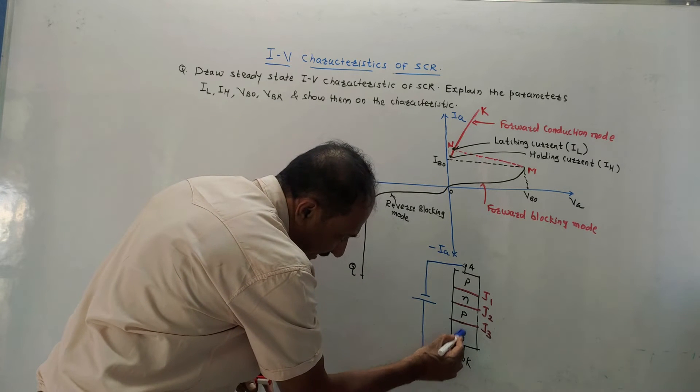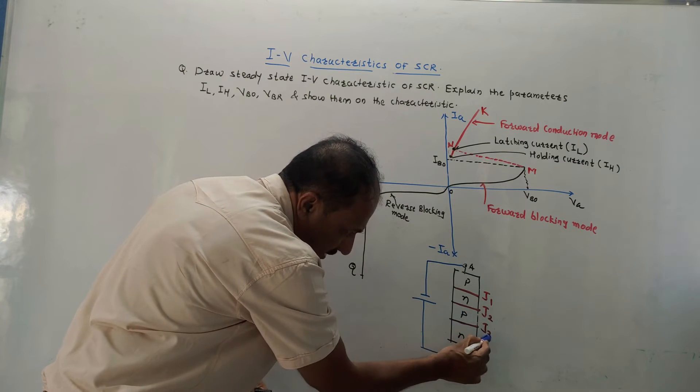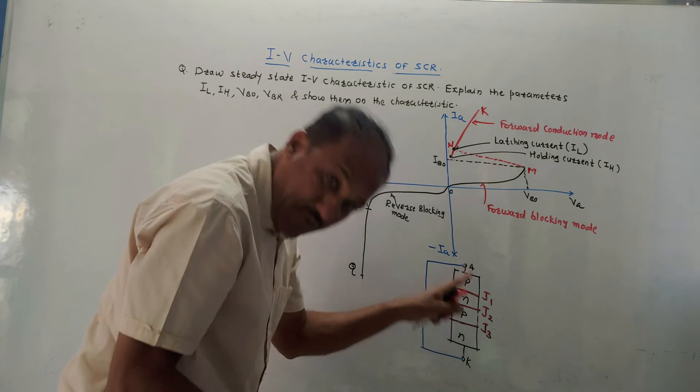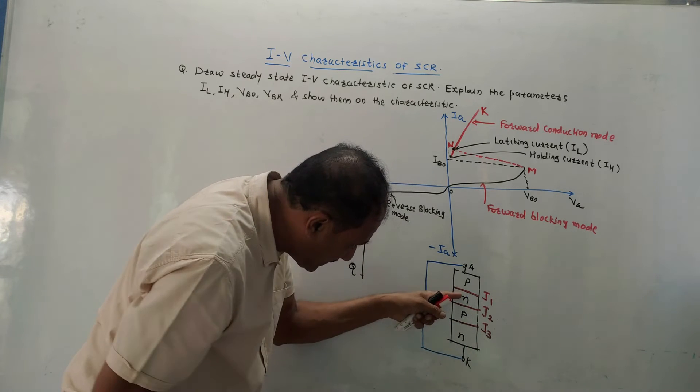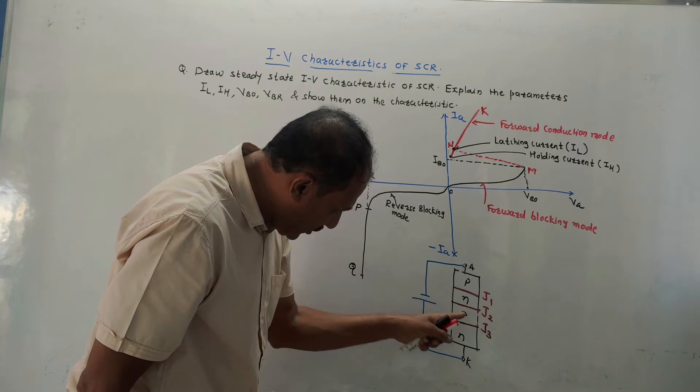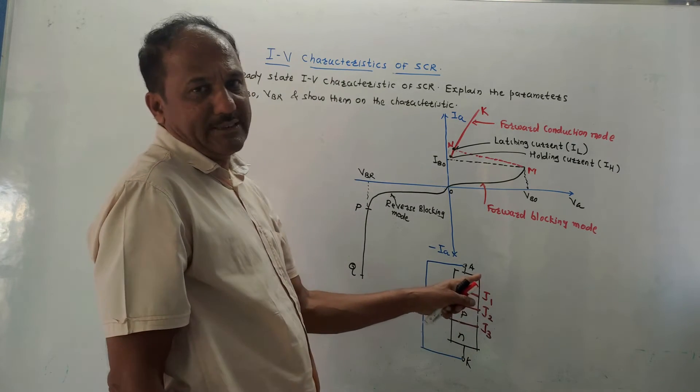Similarly, this N, this is third diode which is having PN junction, junction is J3, N is connected to positive terminal. So it is again reverse biased, whereas the middle diode is made from NP. Here N is connected to negative and P is connected to positive, so middle diode is forward biased.